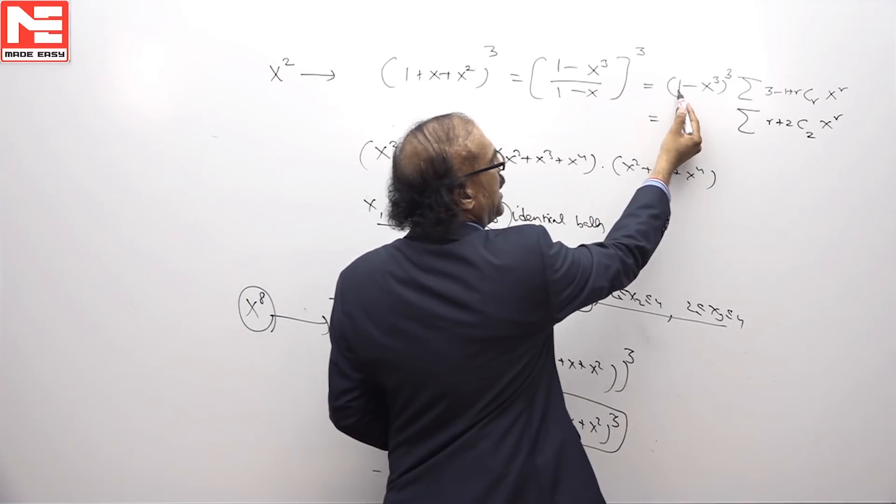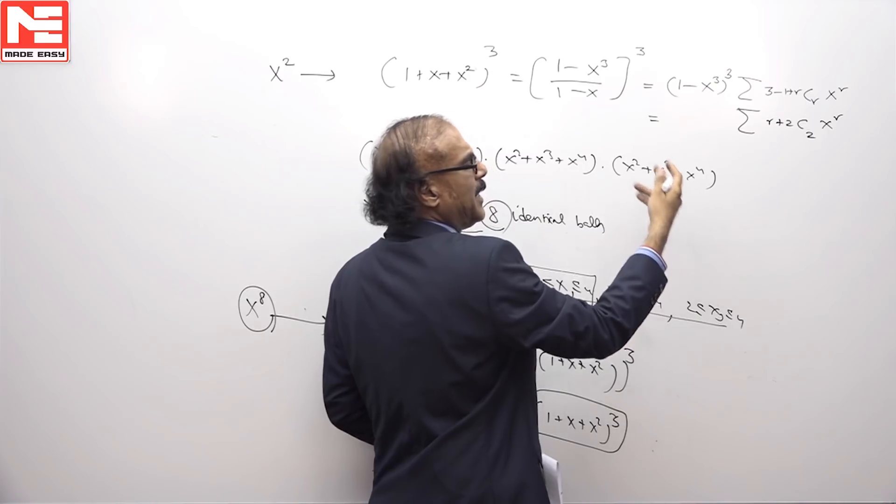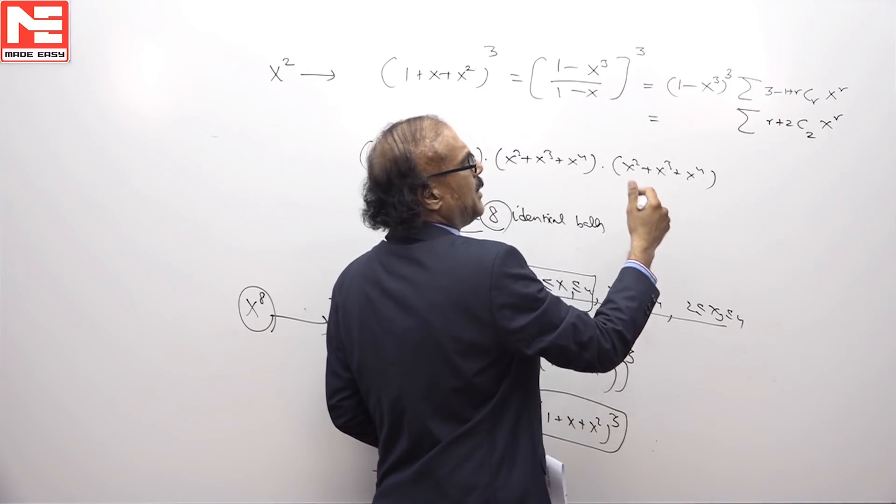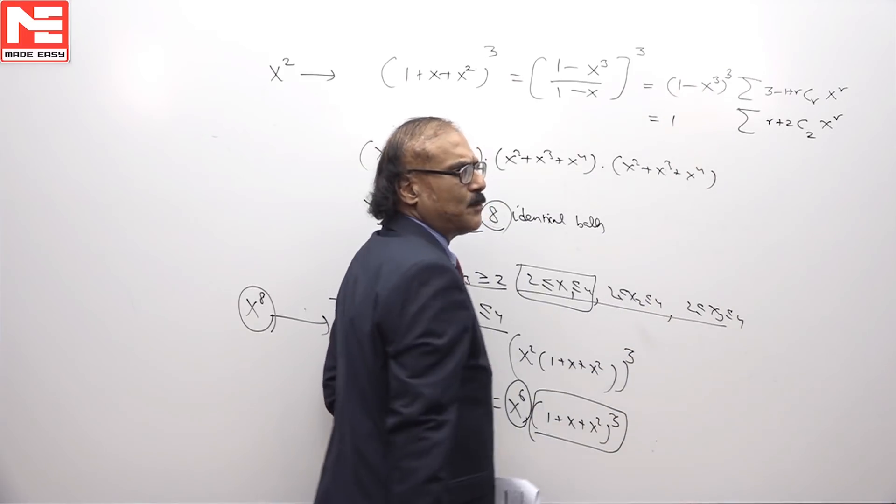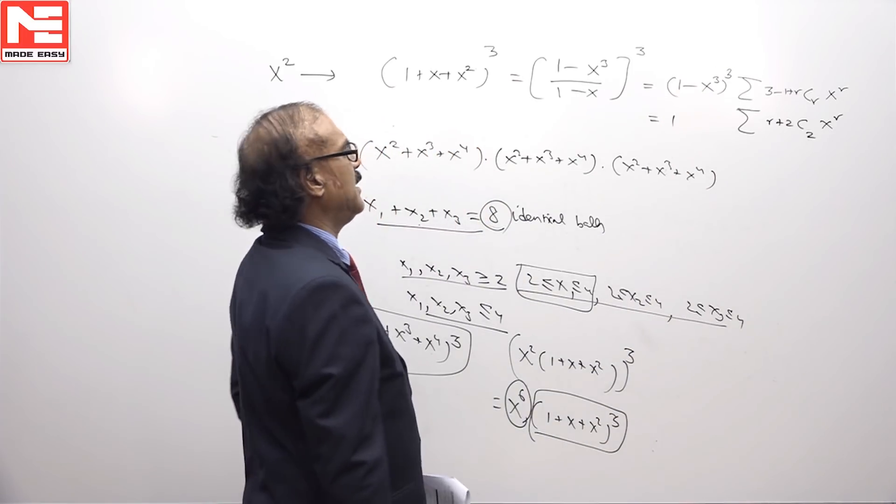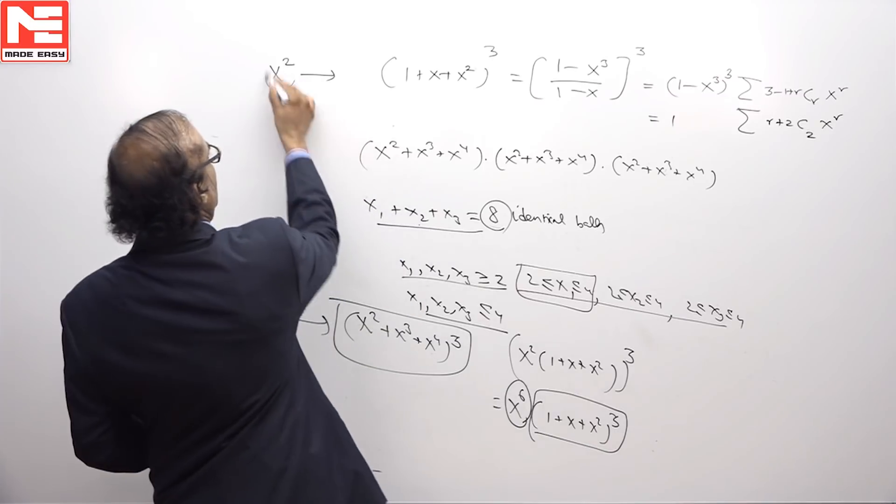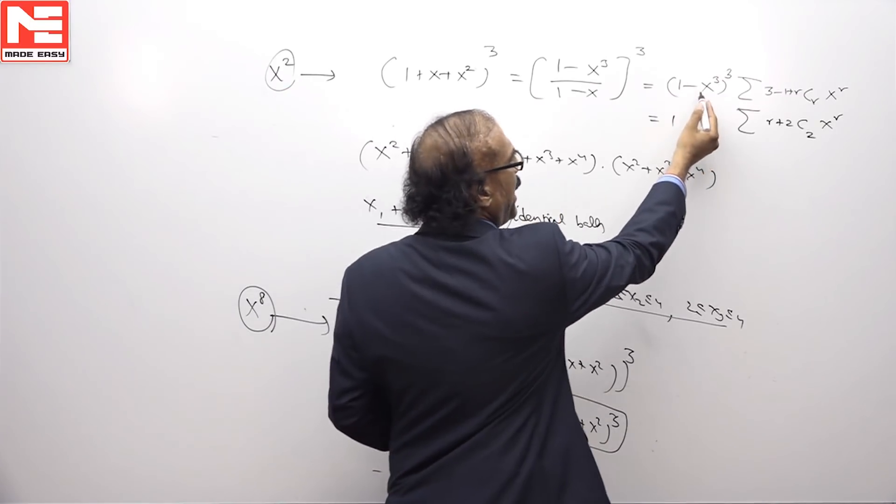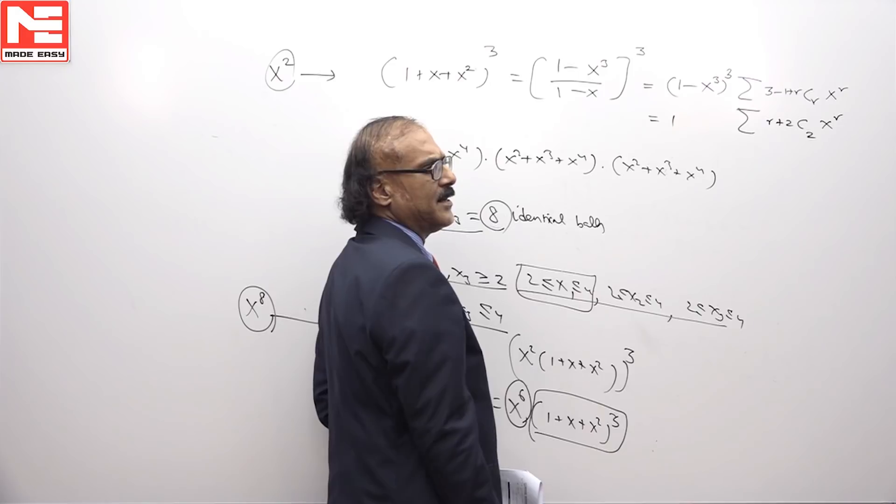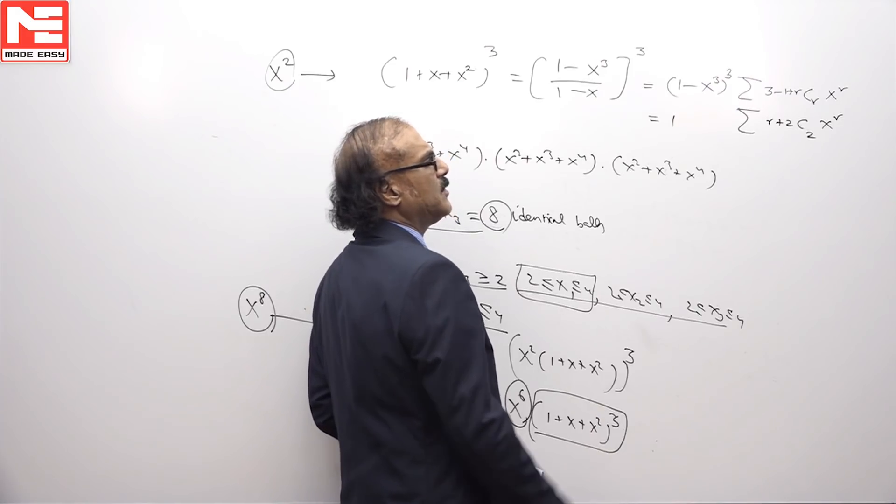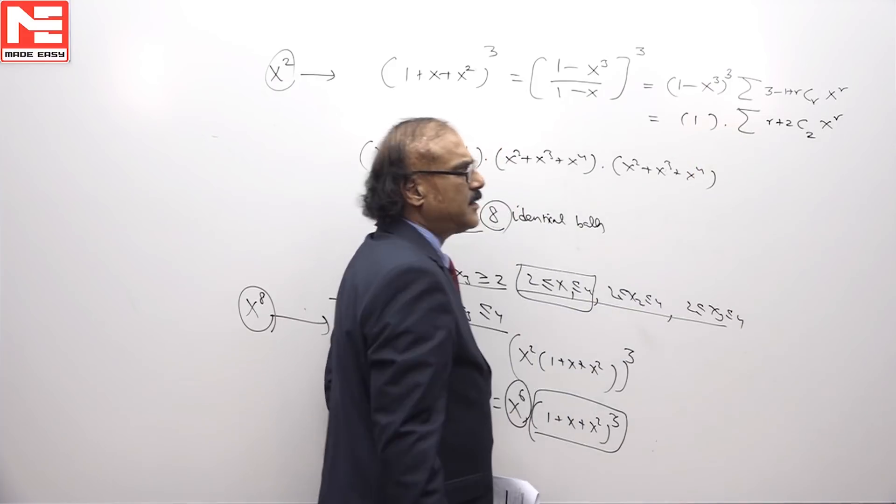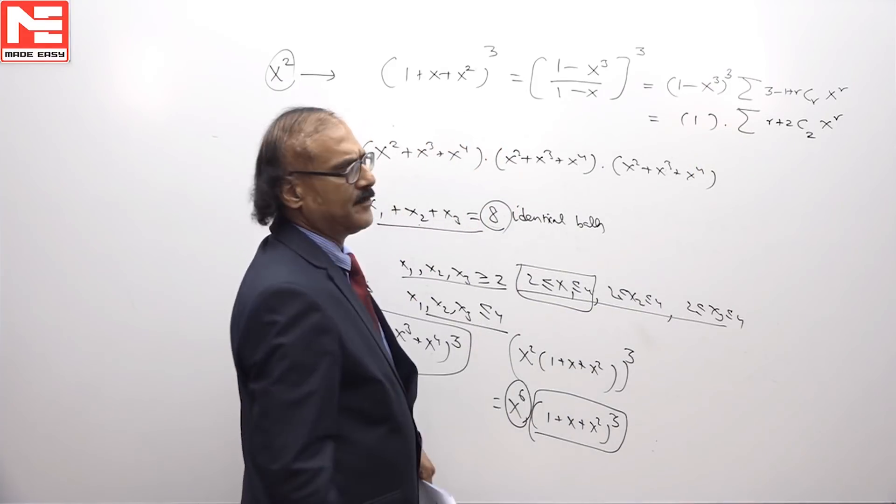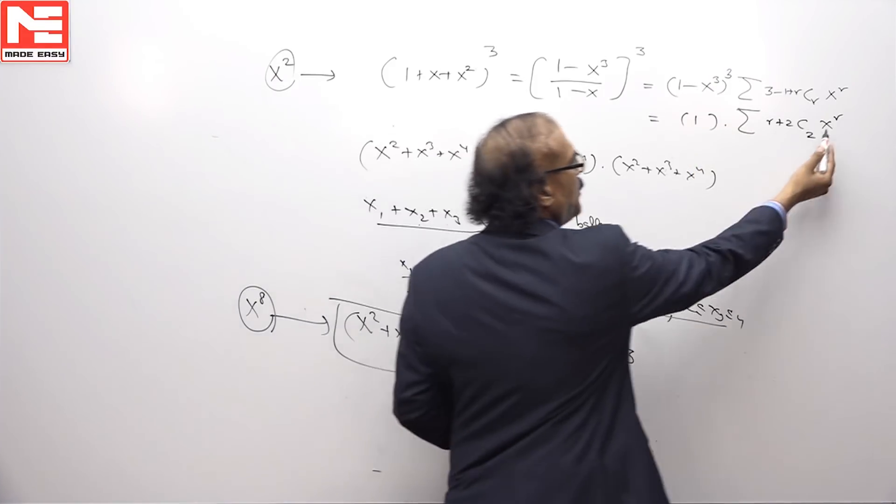There are 3 terms here, a minus b whole cube, a cube minus b cube minus 3 a b into a minus b. A cube term is 1, b cube is too high, it is x power 9. That is well above x square we do not need that, minus 3 into x cube 3 a b that is also more than x square. So we have to take only 1 term which is 1, that is all. The other terms cannot possibly give x square because this cannot be negative.